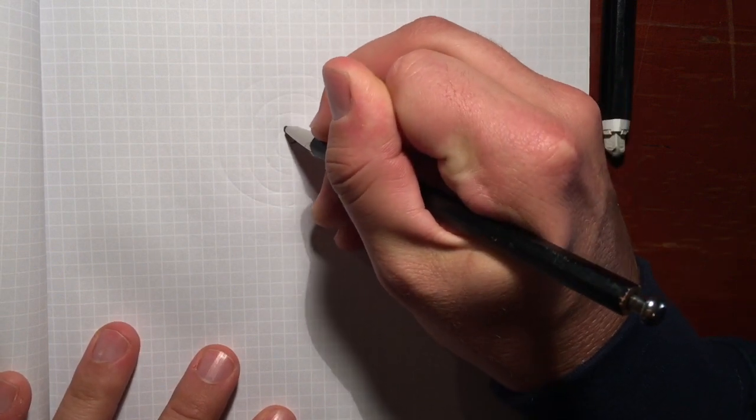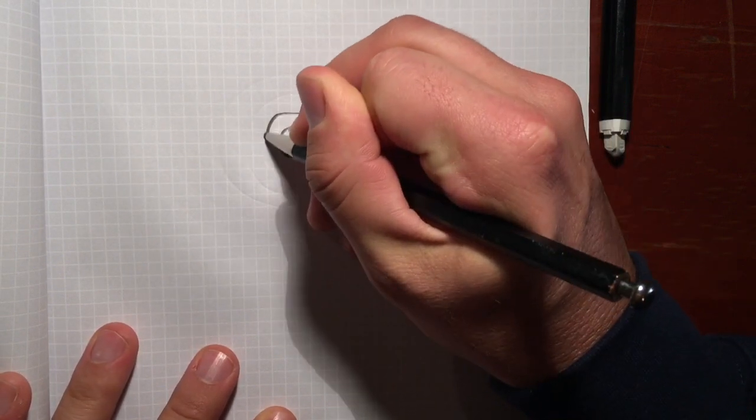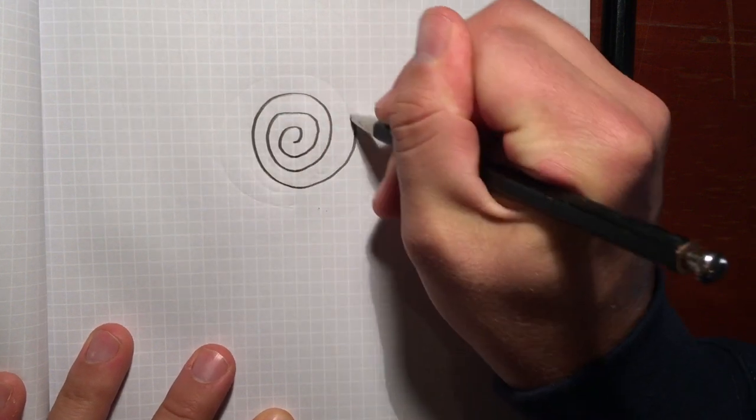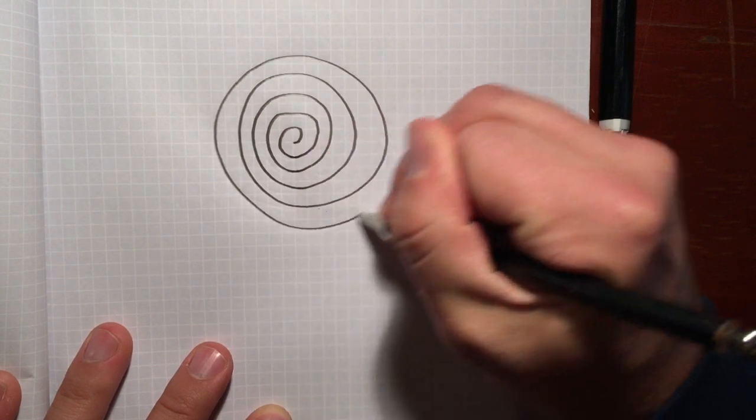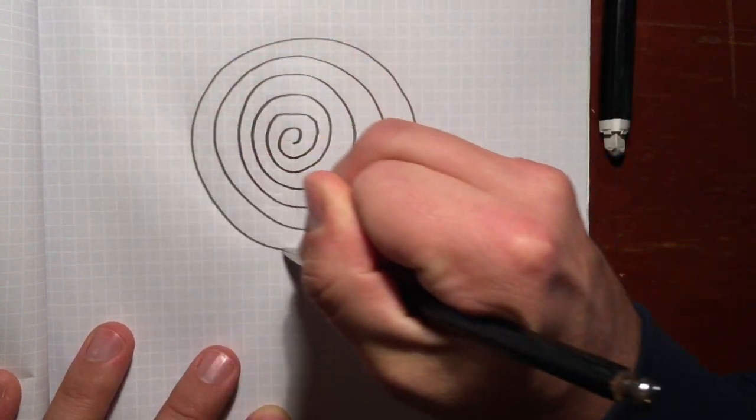So what's even cooler is to increase this to seven points on the spiral, so one, two, three, four, five, six, seven.